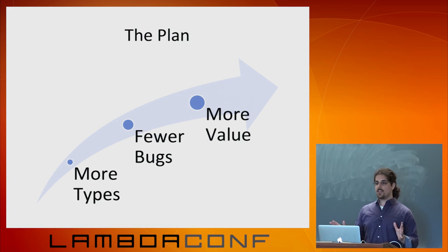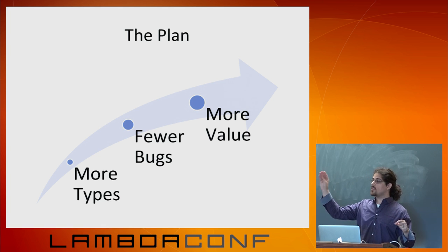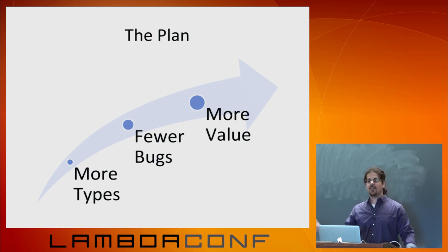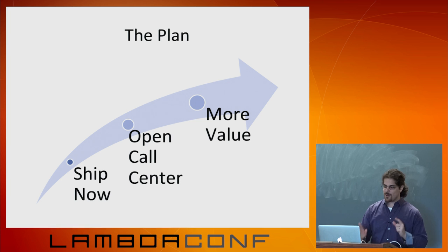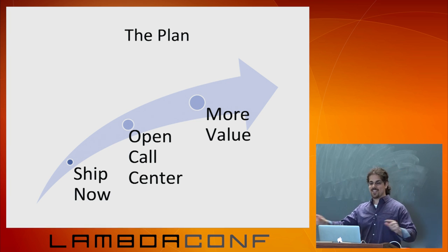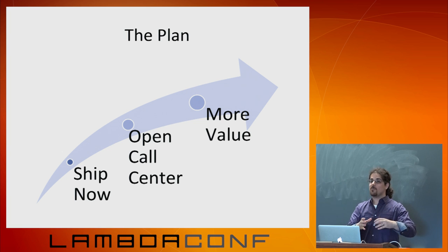Here's the plan the engineer comes up with: we're going to use more types, those types are going to remove bugs, that delivers value to the company, that value means we make more money. The engineer says this to the project manager. The project manager says, 'Okay, that's interesting, but we're going to ship it now. We're going to open a call center — they just removed the minimum wage laws in country X. The minimum wage call center is going to resolve database inconsistencies manually. Don't even worry about race conditions or transactions anymore. We pay them 50 cents an hour.'